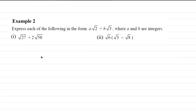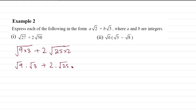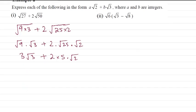Example 2 part 1: 27 can be written as 9 times 3 plus 2 then 50 can be written as 25 times 2. Now we split, this is root 9 times root 3 plus 2 times root 25 times root 2. So this is 3 root 3 plus 2, root 25 is 5 then times root 2. Now we simplify it, so 3 times root 3 plus 2 times 5 is 10 and we write root 2 next.